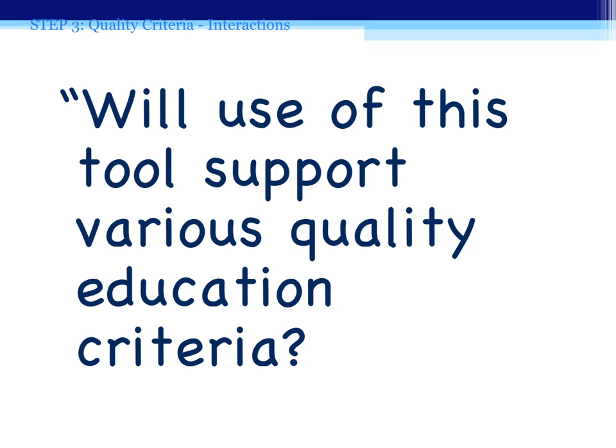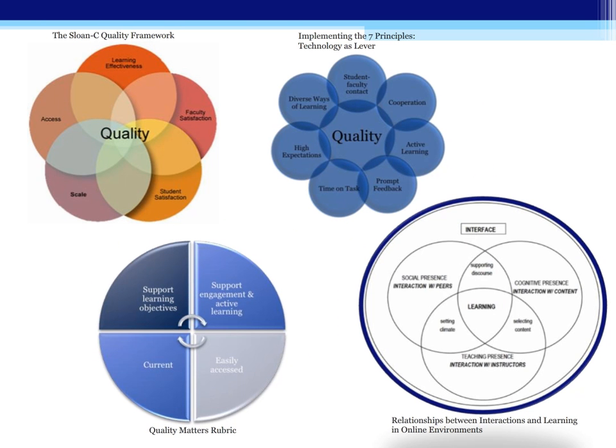Now that we've covered the first two evaluation steps, it is time to look at step three, which is evaluating tools for how they can help you address educational quality criteria. By this time, you've probably narrowed your technology choices for a particular activity or set of activities to just a few, which will save you time as you begin a more extensive evaluation of the tool for its contribution to the overall quality of your course. There are certainly plenty of published criteria for what makes a quality online learning experience — we'll discuss four of those. The first is the Sloan C Quality Framework, also known as the Five Pillars. Quality metrics in this framework include learning effectiveness, faculty and student satisfaction, scale, and access.